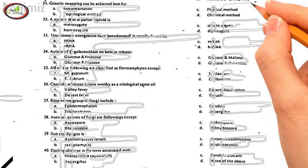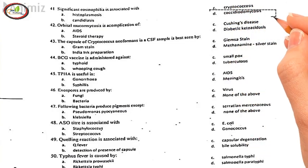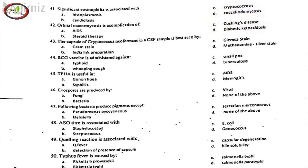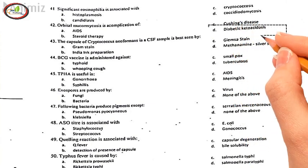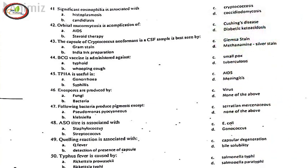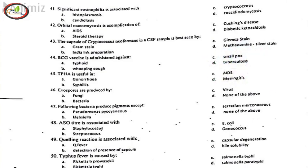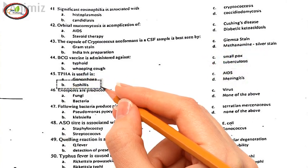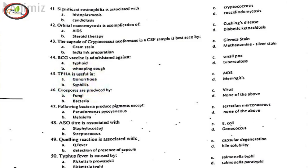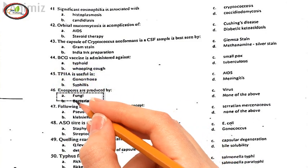41. Significant eosinophilia is associated with, D. Coccidioidomycosis. 42. Orbital mucormycosis is a complication of, D. Diabetic ketoacidosis. 43. The capsule of Cryptococcus neoformans in a CSF sample is best seen by, B. India Ink preparation. 44. BCG vaccine is administered against, D. Tuberculosis. 45. TPHA is useful in, B. Syphilis. 46. Exospores are produced by, A. Fungi.